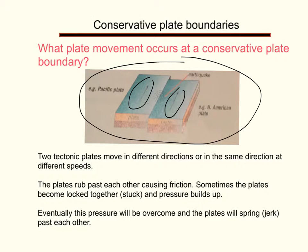As they do this, the plates rub past each other, causing friction. The point where the two plates are moving past — they're rubbing — sometimes the plates become locked together and stuck, and the pressure builds up. Eventually, this pressure will be overcome and the plates will spring or jerk past each other. As that happens, we get seismic waves — vibrations or shockwaves that go outwards from the point where the plate is jerked past each other — and that makes an earthquake and rocks the ground.